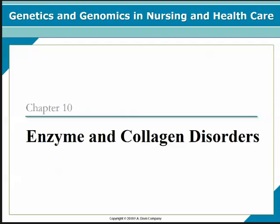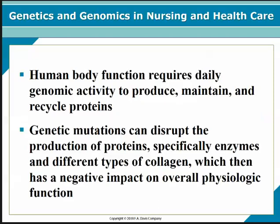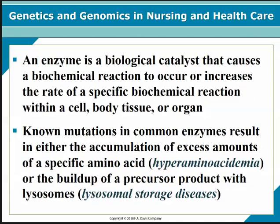Getting started, we're going to talk about how the human body functions. It requires daily genomic activity to produce, maintain, and recycle proteins. Genetic mutations can disrupt the production of proteins, specifically enzymes and different types of collagen, which then has a negative impact on the overall physiologic function of the organism or person. An enzyme is a biological catalyst — it causes a biochemical reaction to occur, or increases the rate of a specific biochemical reaction within a cell, body tissue, or organ. Mutations in common enzymes can result in either the accumulation of excess amounts of a specific amino acid, the buildup of a precursor product, or the buildup of precursor products within lysosomes. That creates two different disorders: lysosomal storage diseases or hyperaminoacidemias, and that's what we're going to be talking about in this chapter.